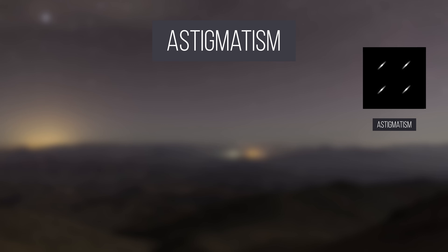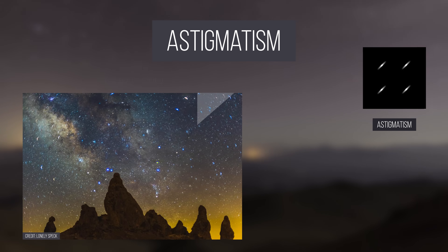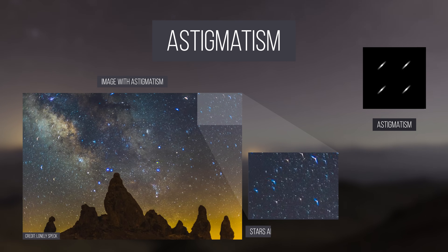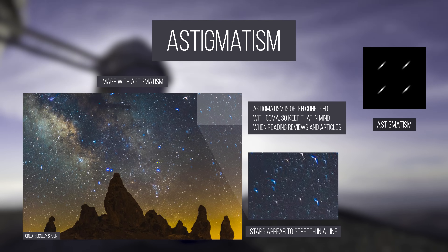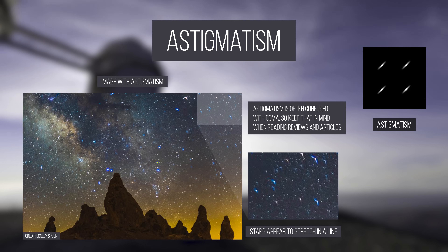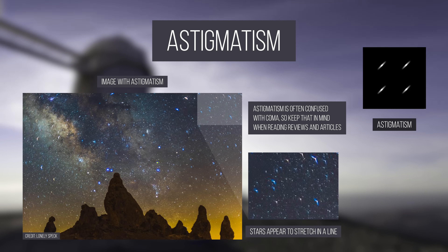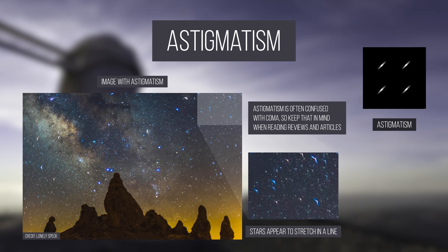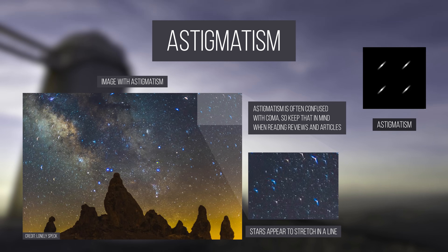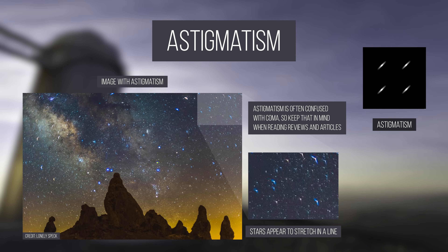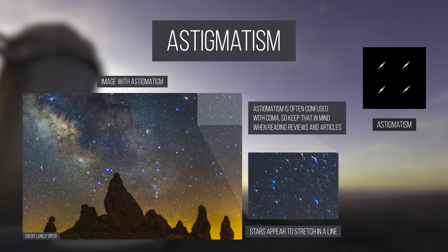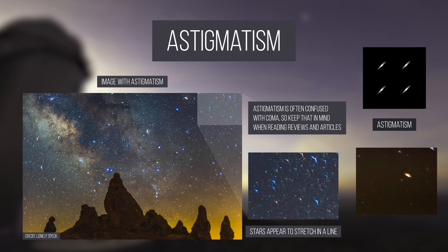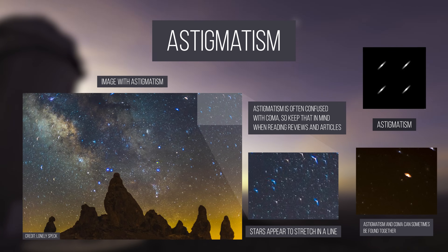Astigmatism is probably the least well-known of the four aberrations, and is often confused for coma. Sometimes astigmatism may even be referenced as coma in reviews, which can be confusing. Astigmatism usually spreads light along an axis that is rotated along the center of the image. Astigmatism is common even in expensive lenses, and can be reduced by decreasing your aperture size. Coma and astigmatism can even be found together in some lenses.